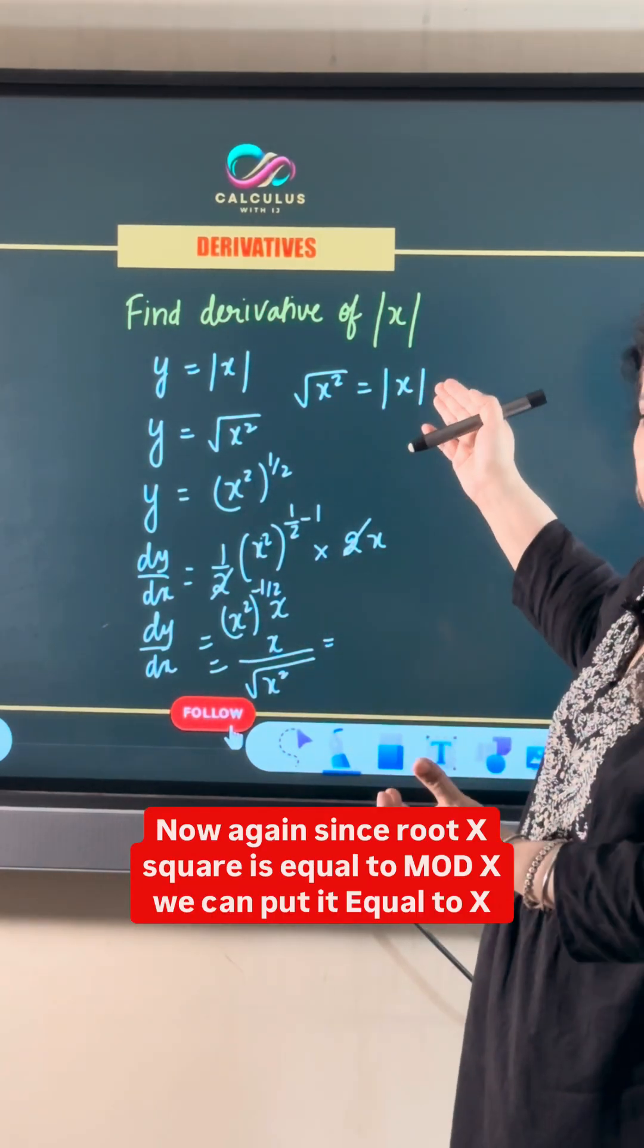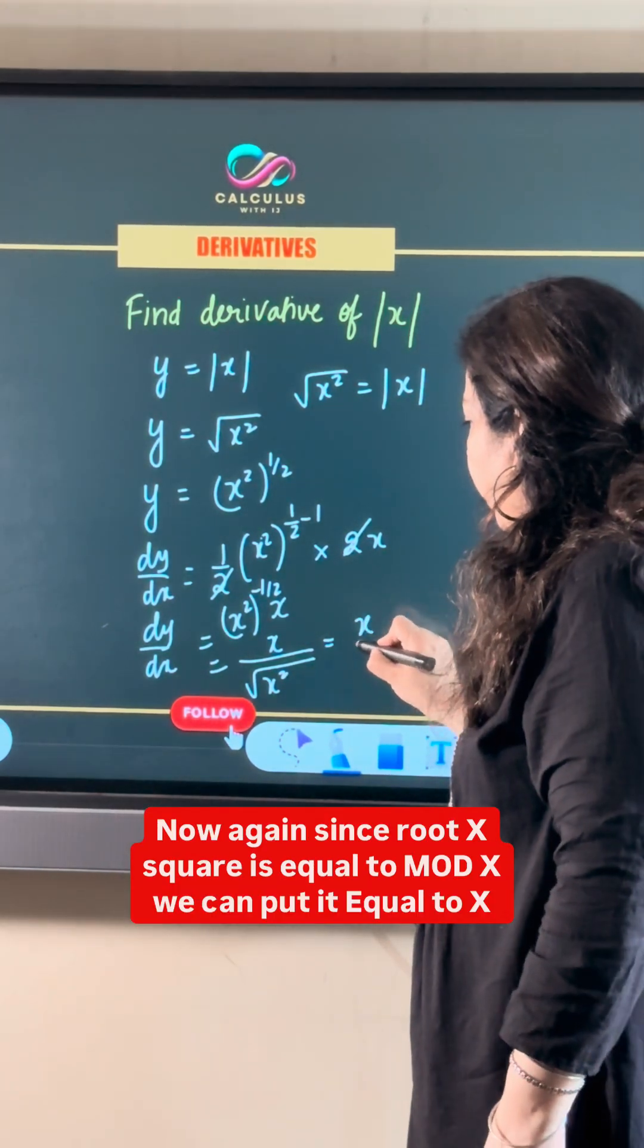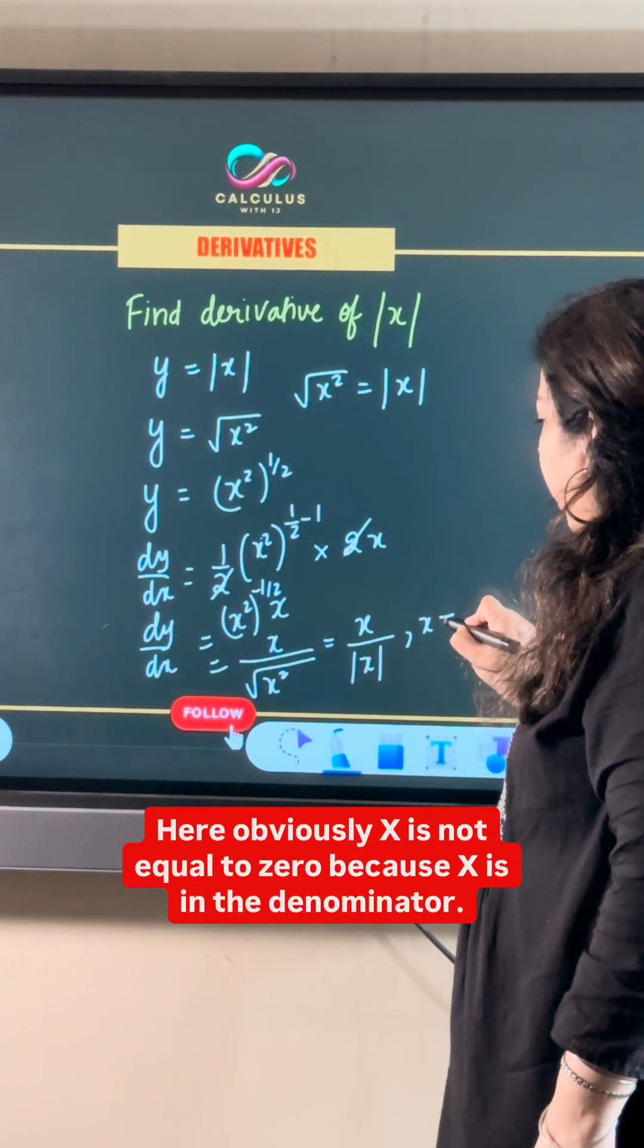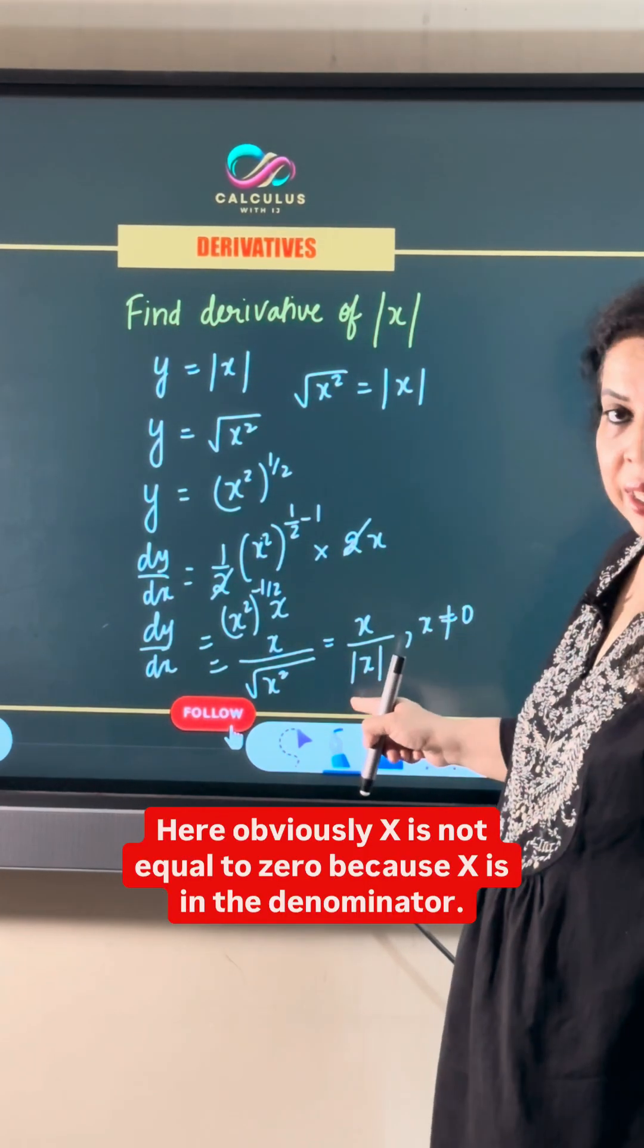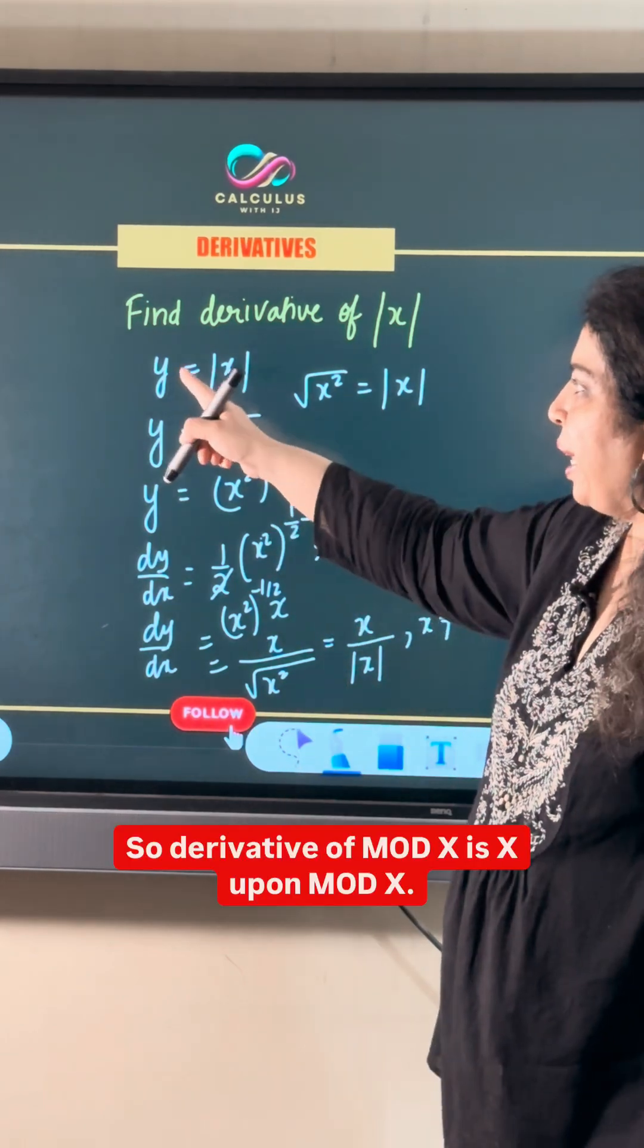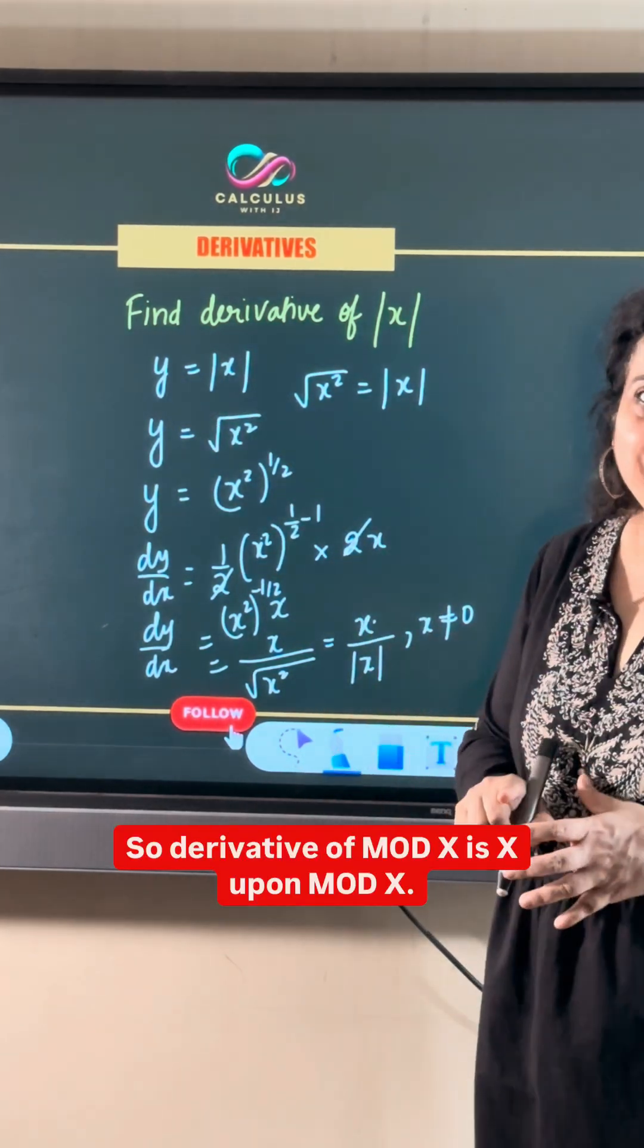Now again since root x square is equal to mod x, we can put it equal to x upon mod x. Here obviously x is not equal to 0 because x is in the denominator. So derivative of mod x is x upon mod x.